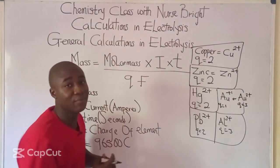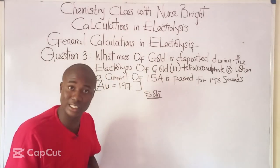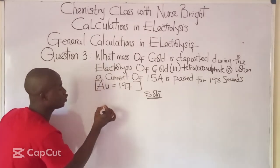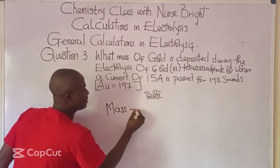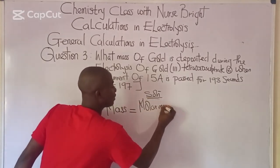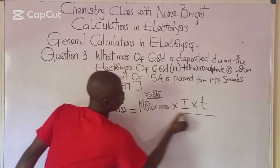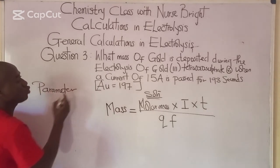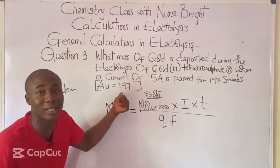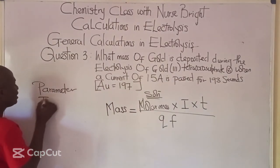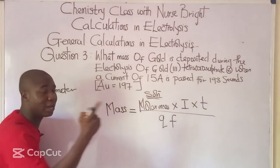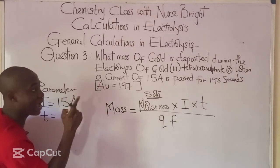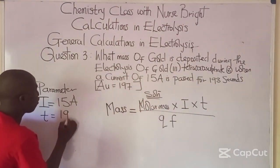Moving to the practice question: what mass of gold will be deposited? When I see this type of question, I recall the formula: mass = (molar mass × I × T) / (q × F). The molar mass of gold is 197. The current is 15 amperes and must be in amperes. Time is 193 seconds.